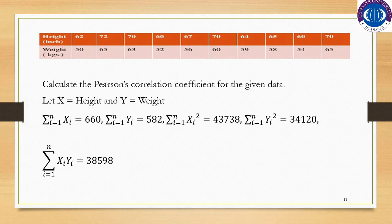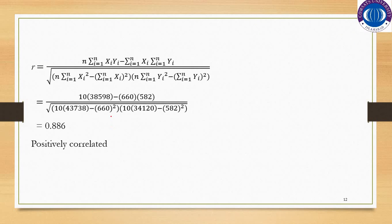Here is an example: data on height and weight is given. Calculate the Pearson correlation coefficient for the given data. Let x equal height and y equal weight. We calculate summation x by summing the first row, summation y by summing the second row, summation x-squared by squaring all values of the first row, summation y-squared by squaring and summing all values of the second row, and summation xy as 62×50 + 72×65 + 70×63, and so on.